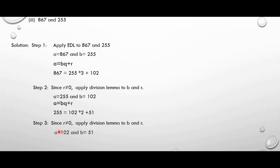Now a becomes 102 and b becomes 51. Again applying the formula a equal to bq plus r, we get 102 equal to 51 into 2 plus 0. We have got remainder as 0. The remainder has become 0. Since the divisor at this stage is 51, we need to consider 51 as the HCF of 867 and 255. Therefore the solution is 51.